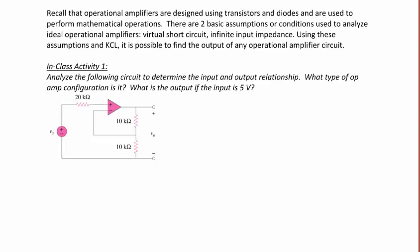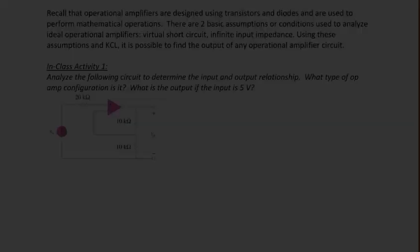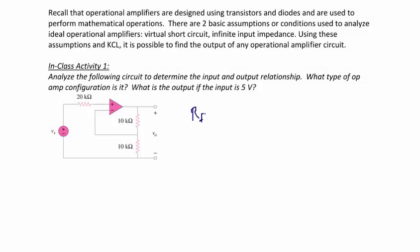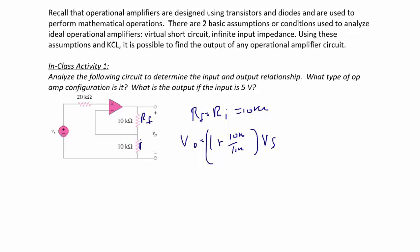Analyze the following circuit to determine the input-output relationship. Even though it is positive on top and negative on the bottom, this is still a non-inverting amplifier. RF equals 10 kilohms and RI equals 10 kilohms, so V0 equals 1 plus 10k over 10k times VS, which equals 2 VS. RF is the resistor between the output and the negative terminal, and RI is between ground and the negative terminal. If VS equals 5 volts, then V0 equals 2 times 5, which equals 10 volts.